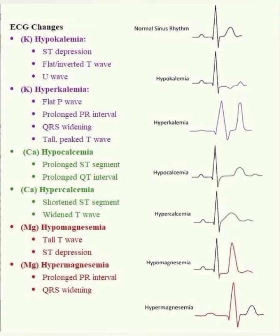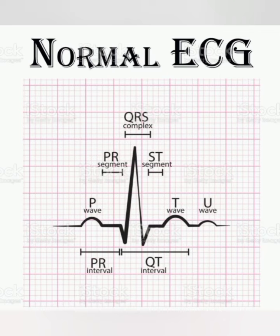Now at the end of this video we'll discuss the normal ECG. The P wave has a normal duration of 0.11 seconds and represents atrial depolarization. The QRS complex has a normal duration of 0.08 to 0.12 seconds and represents ventricular depolarization. The T wave shows ventricular repolarization. The ST segment shows the time during which the ventricles have contracted. The normal duration for the PR interval is 0.12 to 0.20 seconds.